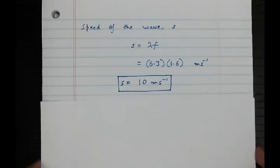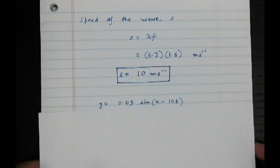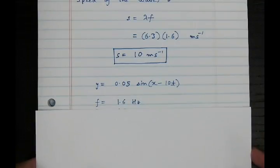Now you see in this example, we were just given a wave equation and we use this equation to find out all the information about the wave. That is the frequency, the wavelength and the speed of the wave through the string.